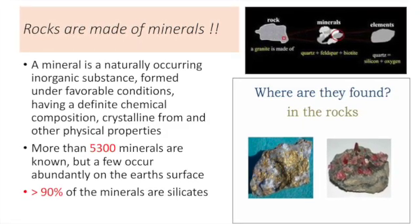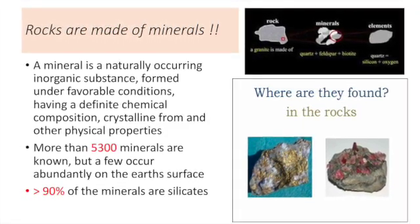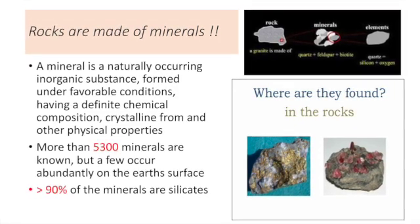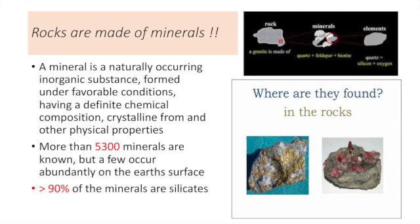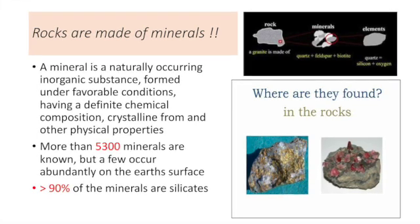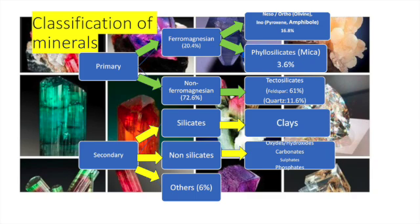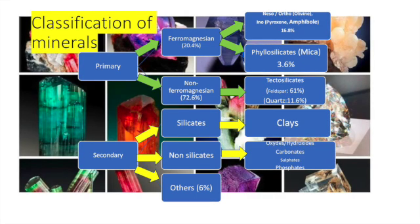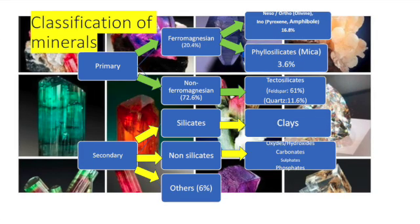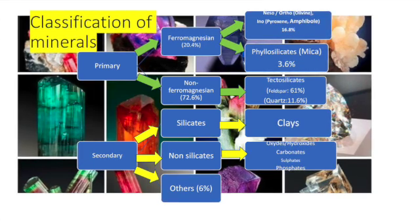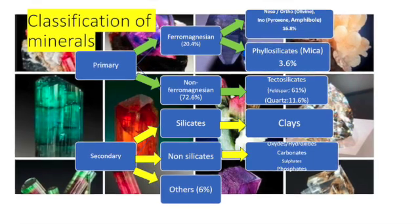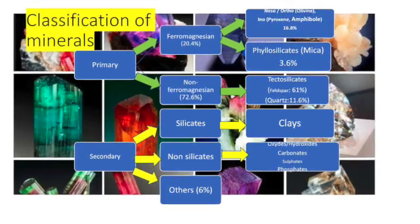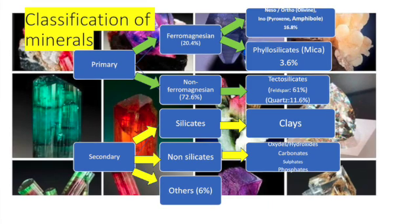Although more than 5,300 minerals are known, only a few occur on the earth's surface. To your surprise, more than 90% of the minerals are silicates. Minerals are classified as primary or secondary based on when and how they are formed. Primary minerals are formed when magma cools and solidifies, whereas secondary minerals are formed by chemical or physical reactions within rocks.